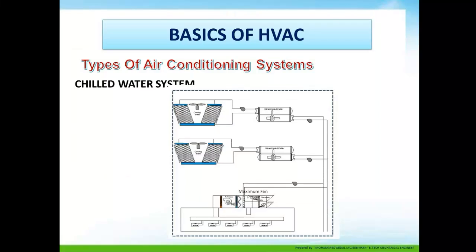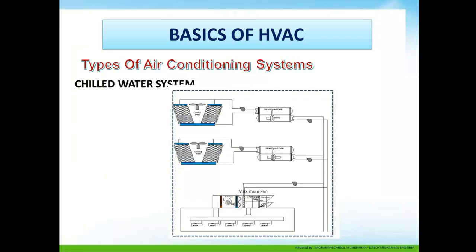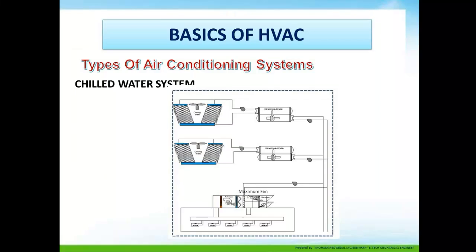A typical example of a chilled water system: you can see the cooling tower, chiller, fan coil, air handling unit, and fan coil unit. In the chiller, the refrigerant acts as the primary system, while the water flowing through the evaporator of the chiller to the AHU and the fan coil unit acts as the secondary system, where chilled water is supplied.